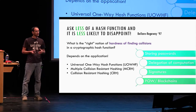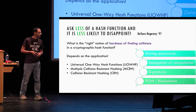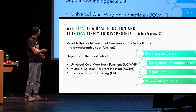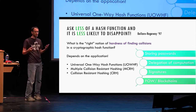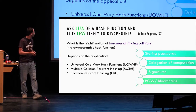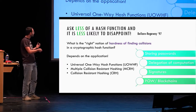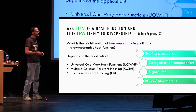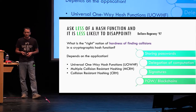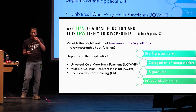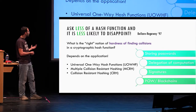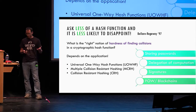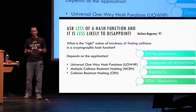We have all sorts of security definitions. Maybe the most standard one is a CRH, a collision resistant hash. We also have a weaker security definition called universal one-way hash functions, and also recently introduced the notion of multi-collision resistant hash. I'll talk about the differences between these definitions.